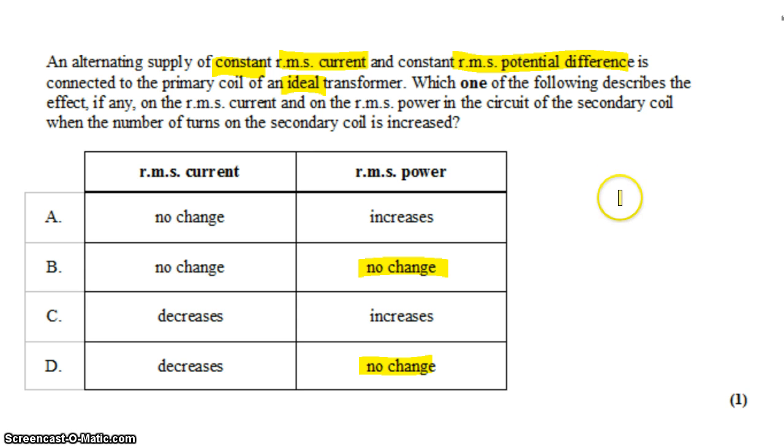That means the total change in flux linkage can be greater, which means that the rate of change in flux linkage can be greater, which means that the EMF generated in the secondary coil can be greater. So in other words, increasing the number of coils on one side increases the EMF produced on that side.